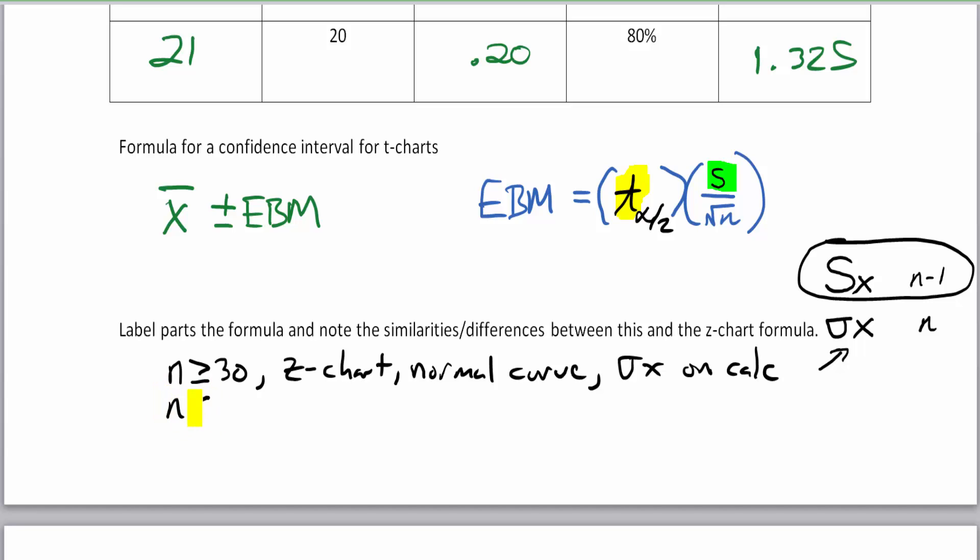Now if you have n less than 30, use your t-chart—that's a cursive letter t that kind of looks nice—use t-curves, and you don't have pictures of all 30 t-curves here, but you're going to use this chart for that. And you're going to use the capital letter s x on the calc.